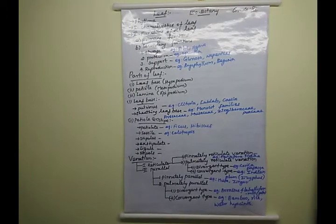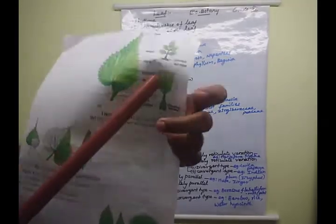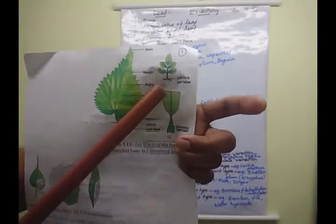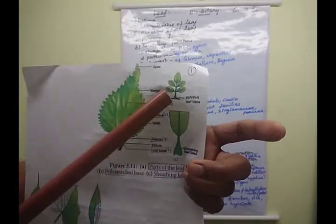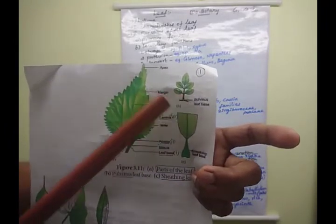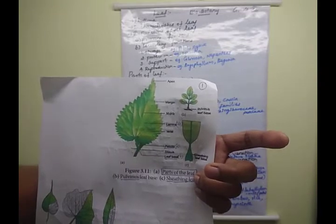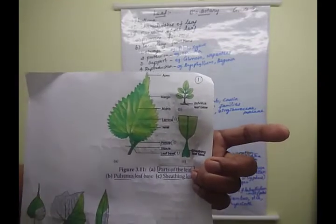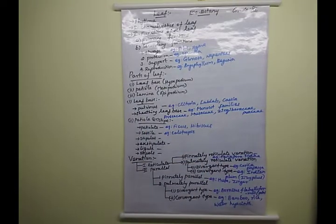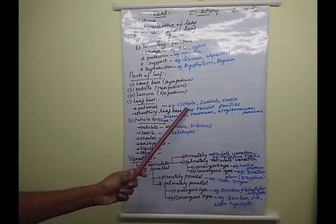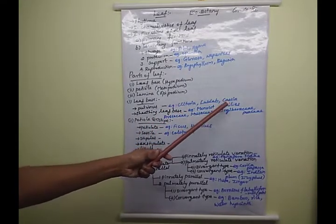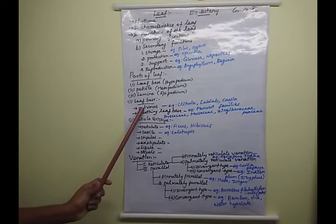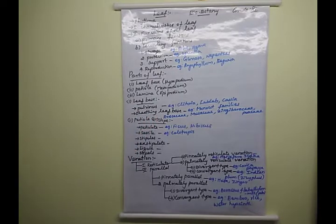Pulvinus leaf base is seen in leguminous plants. The leaf base is broad and swollen, attaching to the stem. This type is called pulvinus leaf base. Examples of species that have pulvinus leaf base are Clitoria, Lablab, and Cassia.